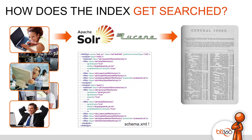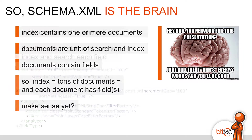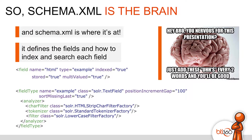So I think we've established that schema is the brain. Index contains one or more documents. Documents are a term of search in the index. So if we do A equals B equals C — an index is a ton of documents, all having a ton of fields possibly. And schema.xml is where it's at. It defines the fields and how indexing and searching each work.